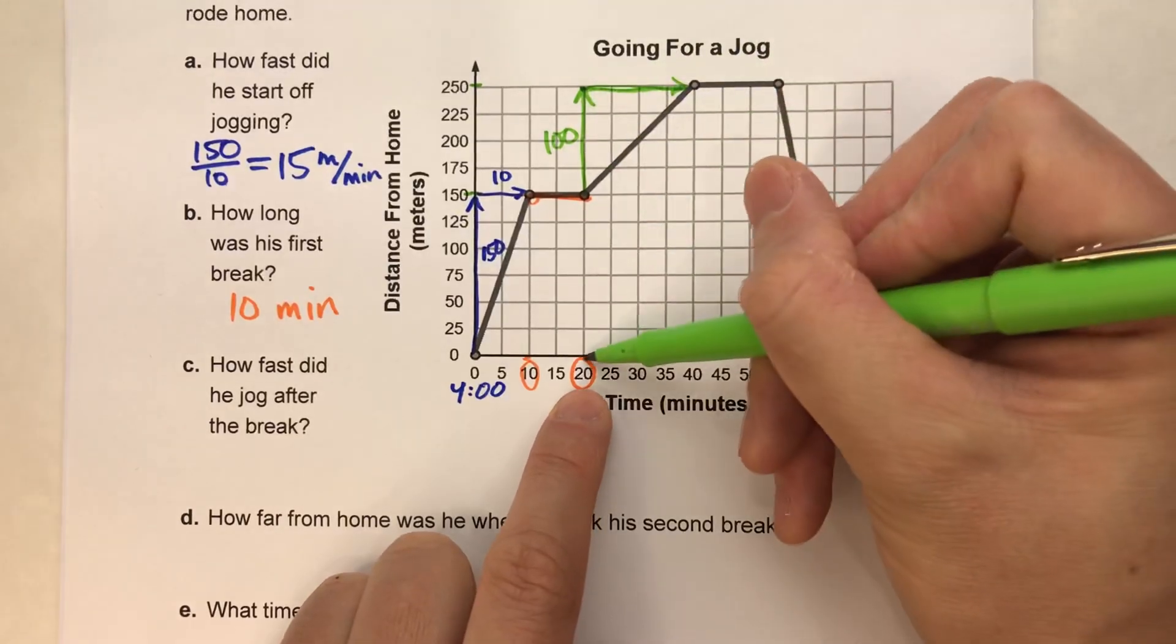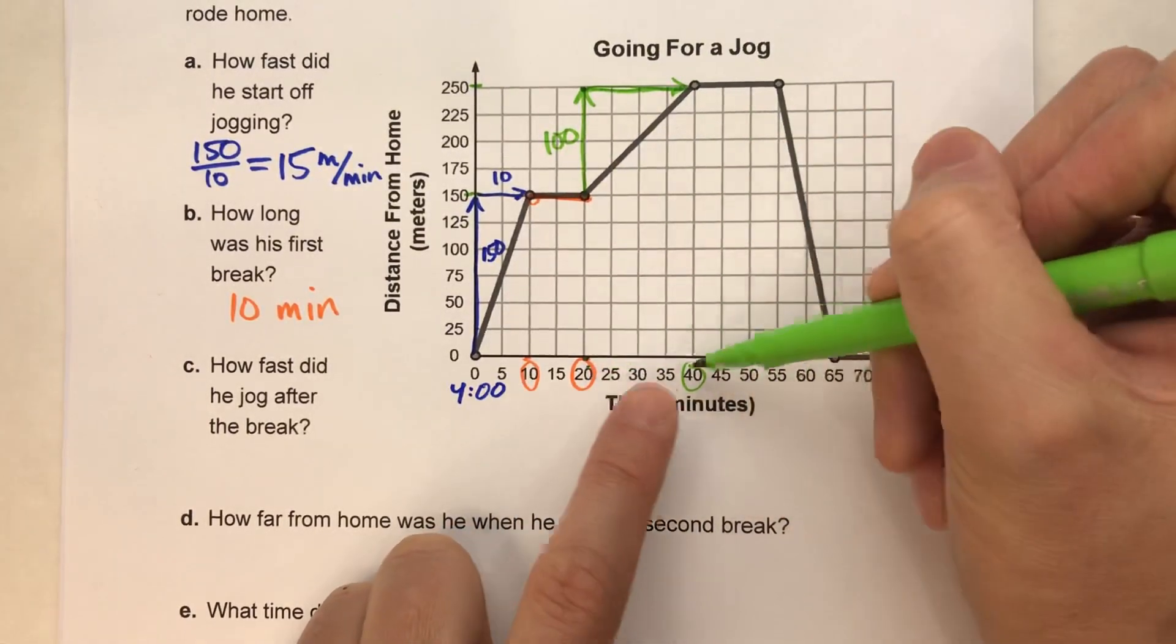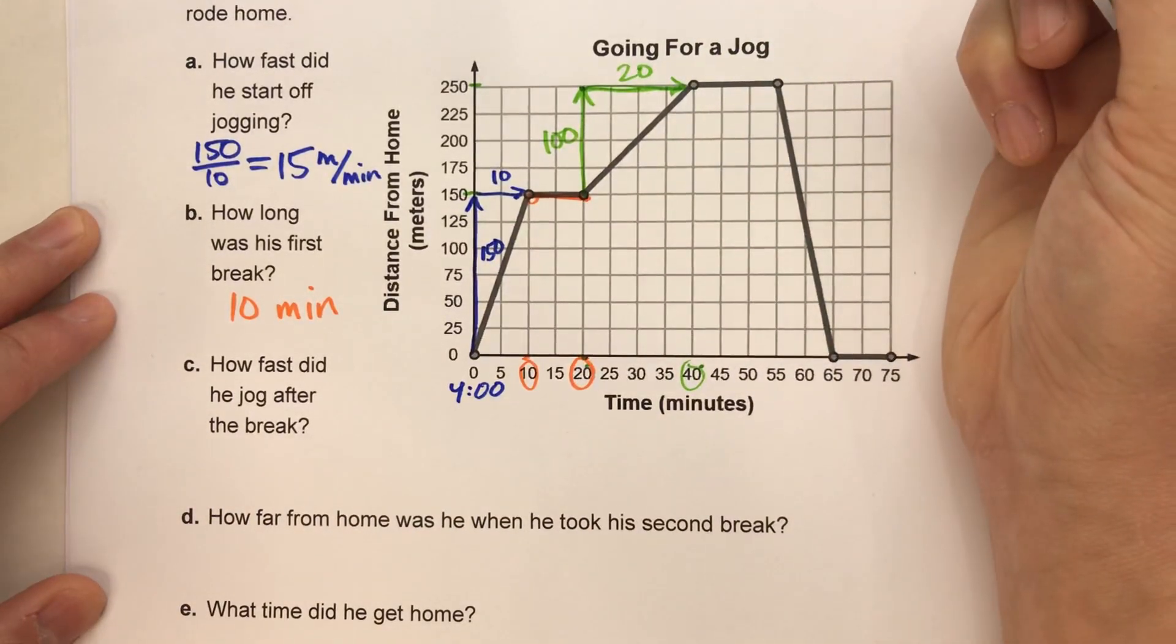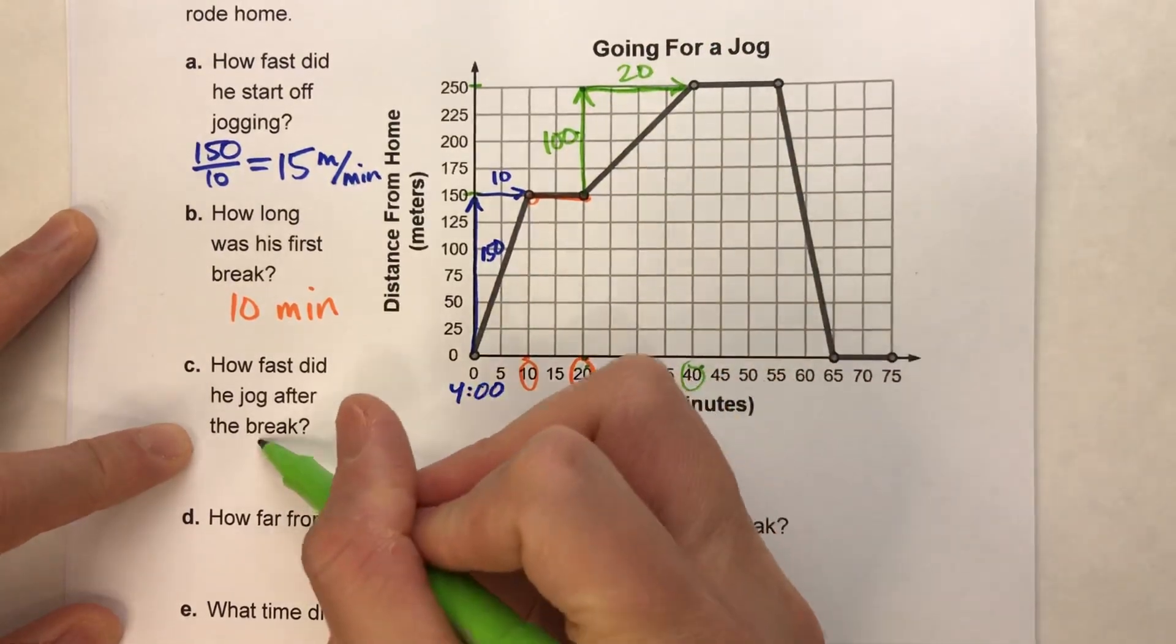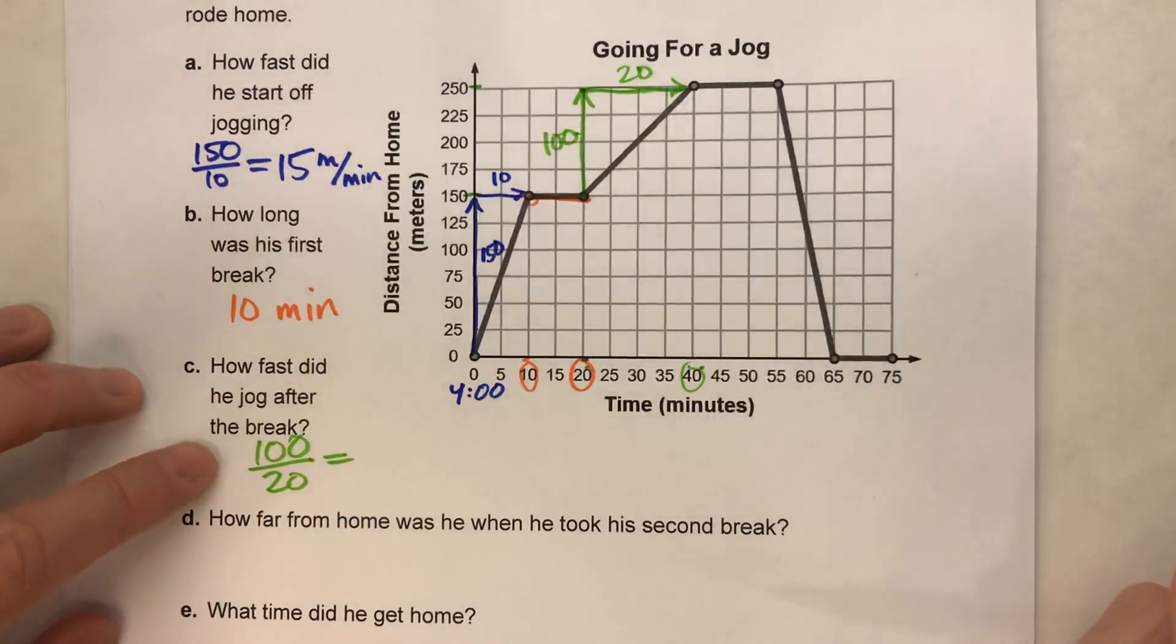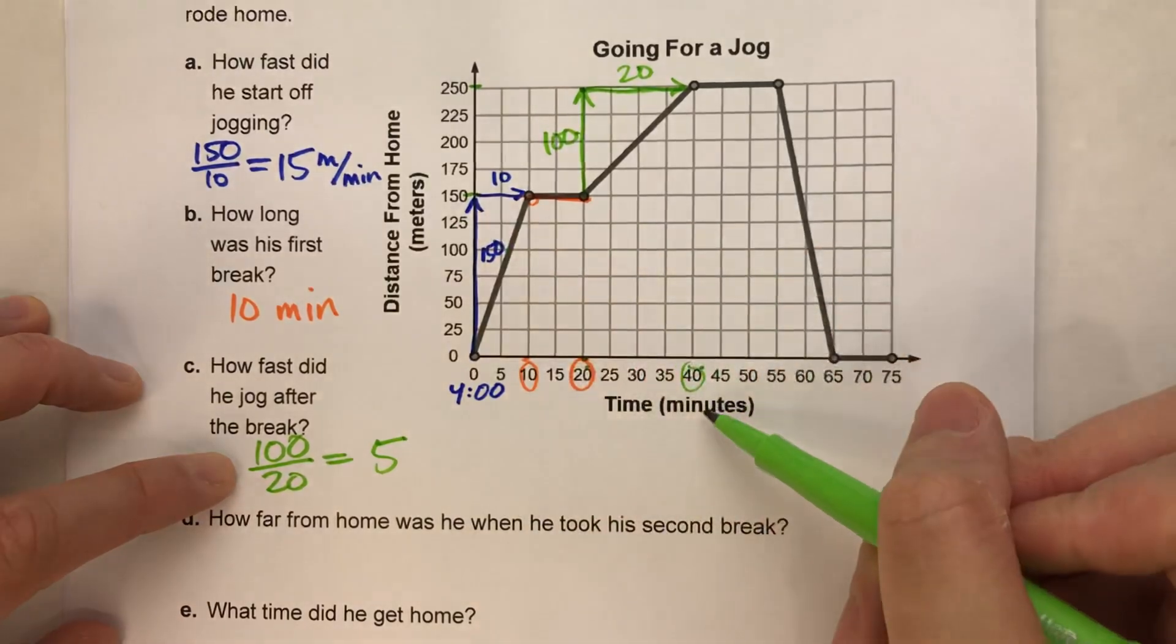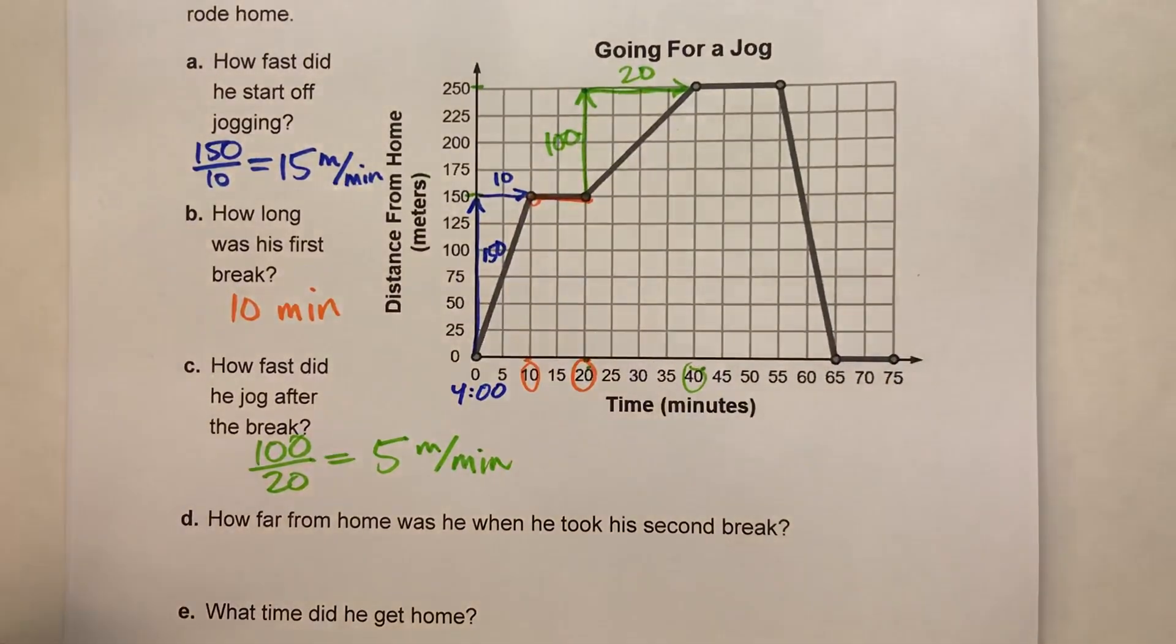And for the run, we know he started at 20 minutes and ended at 40 minutes. So from 20 to 40, that would be 20 minutes for the run. So if I want my slope, I do rise over run, 100 over 20. And 100 divided by 20 is 5. So this is 5 meters per minute.